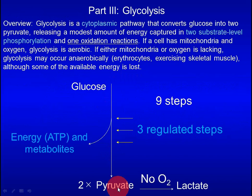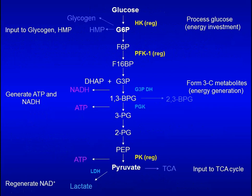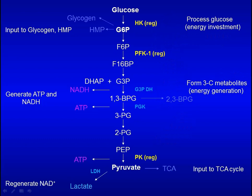Glycolysis is a cytoplasmic pathway that converts glucose into two pyruvate molecules, releasing a modest amount of energy. Energy is captured in two substrate-level phosphorylation reactions and one oxidation reaction. Glycolysis can be roughly divided into two phases. The first phase processes glucose and prepares it for cleavage — this phase coincides with energy investment. The second phase cleaves glucose, converts it to 3-carbon intermediates, and extracts energy — coinciding with energy generation.